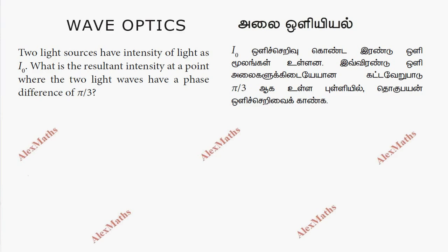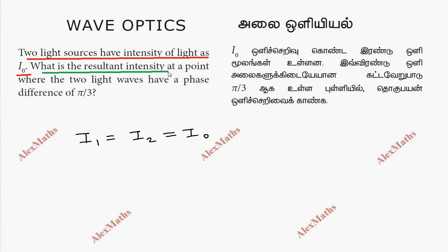Hi students, this is Alex here. In the video, we have two light sources with two intensities of I₀. What is the resultant intensity where the two light waves have a phase difference of π/3?